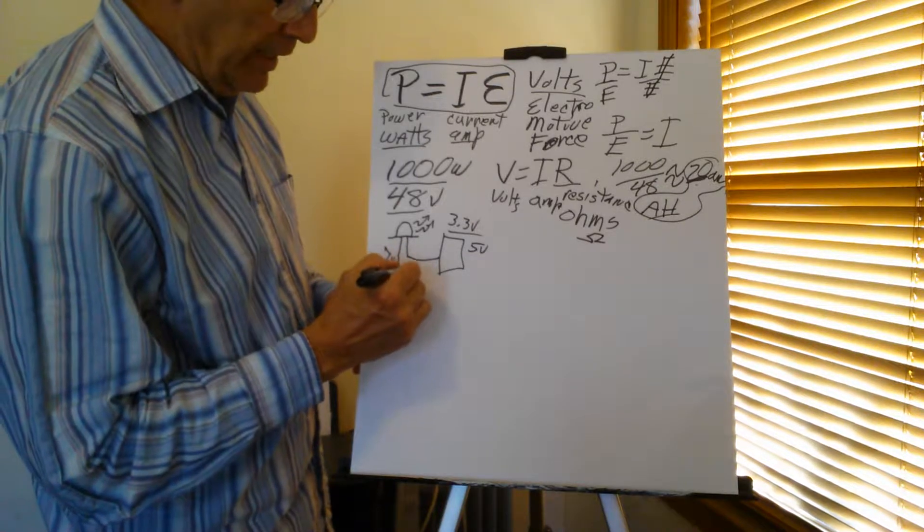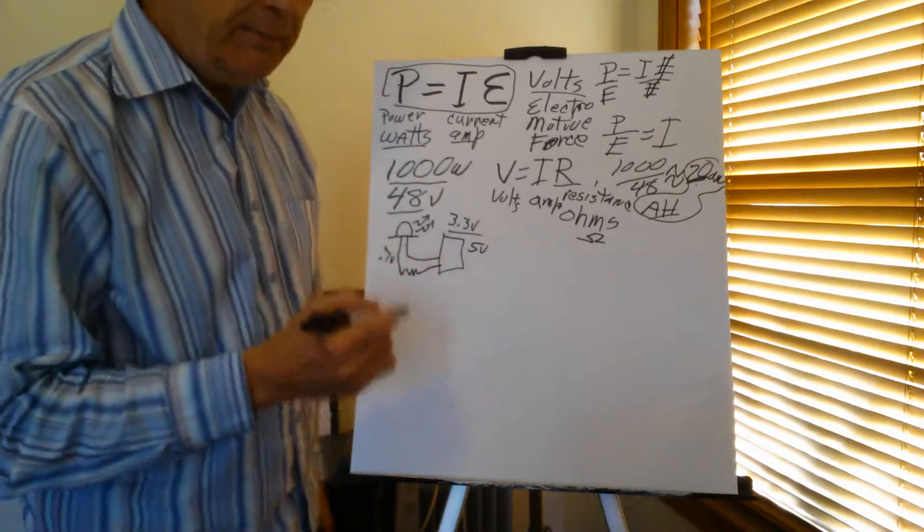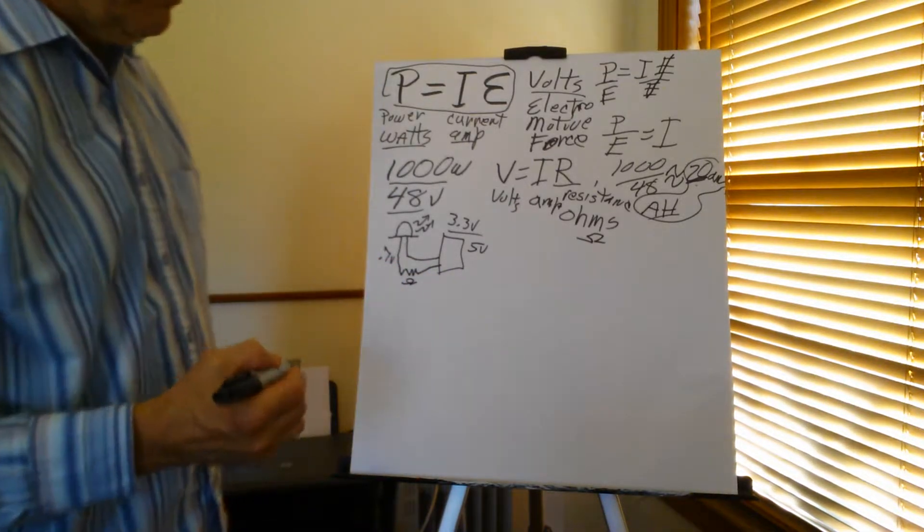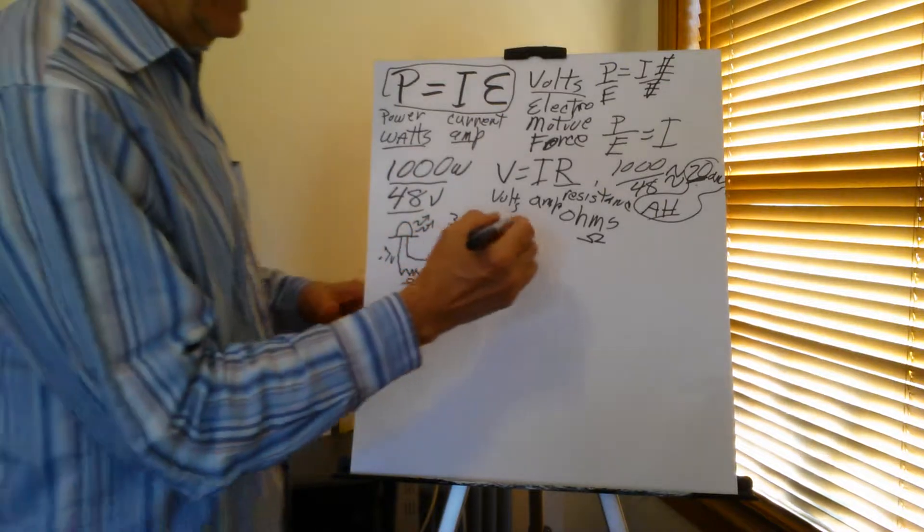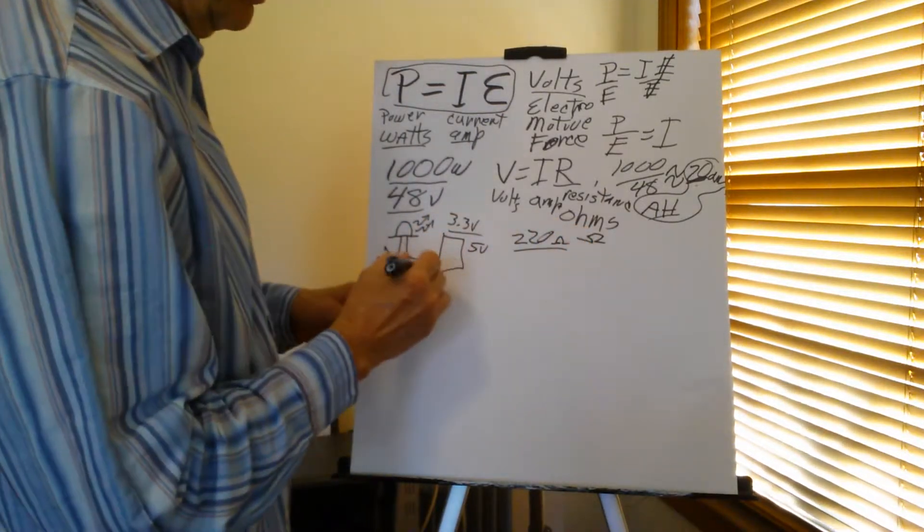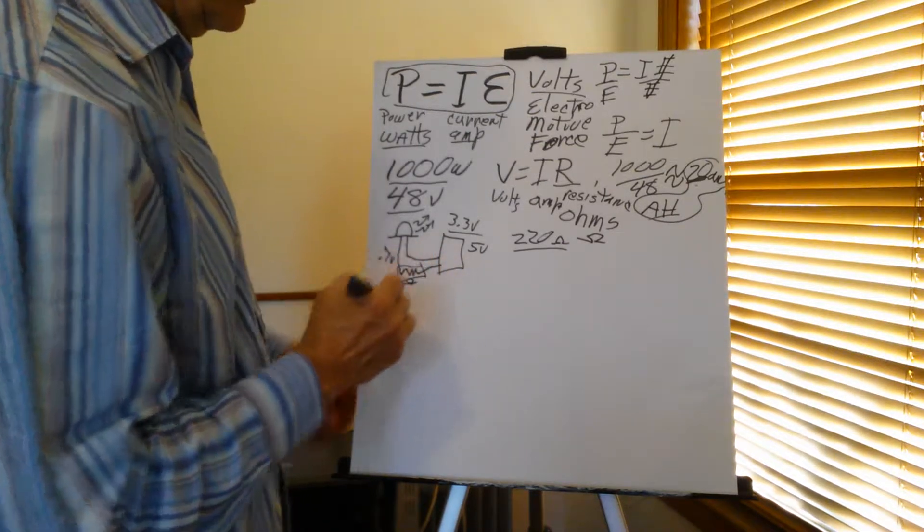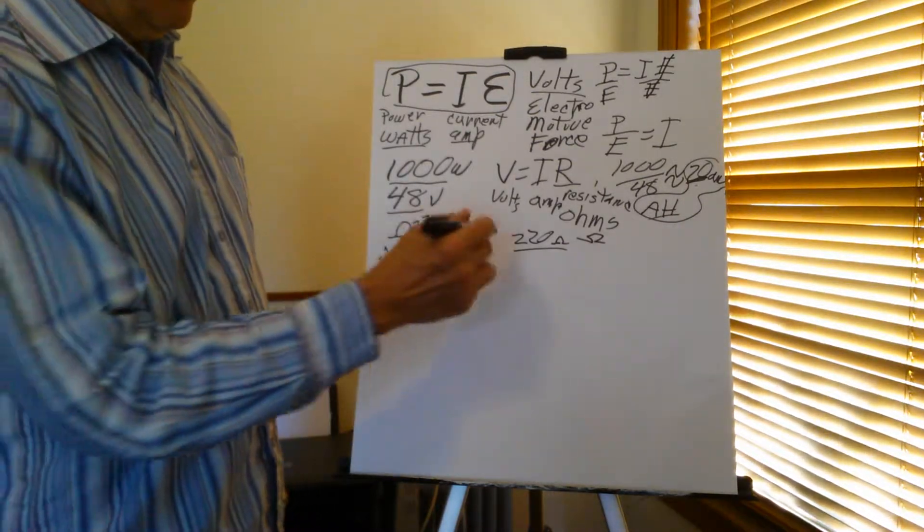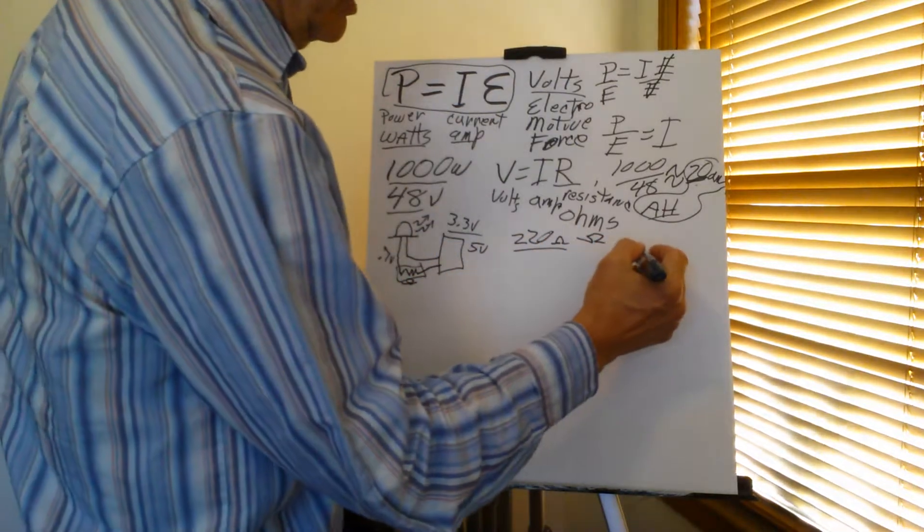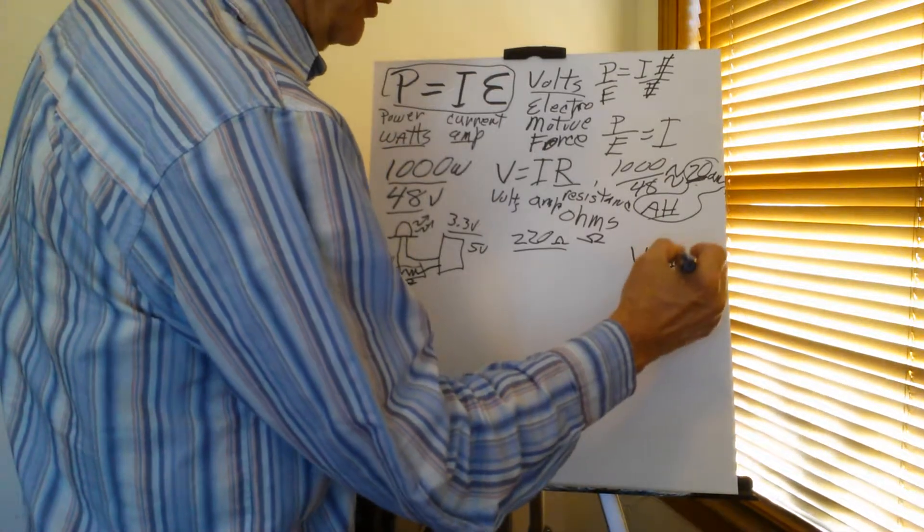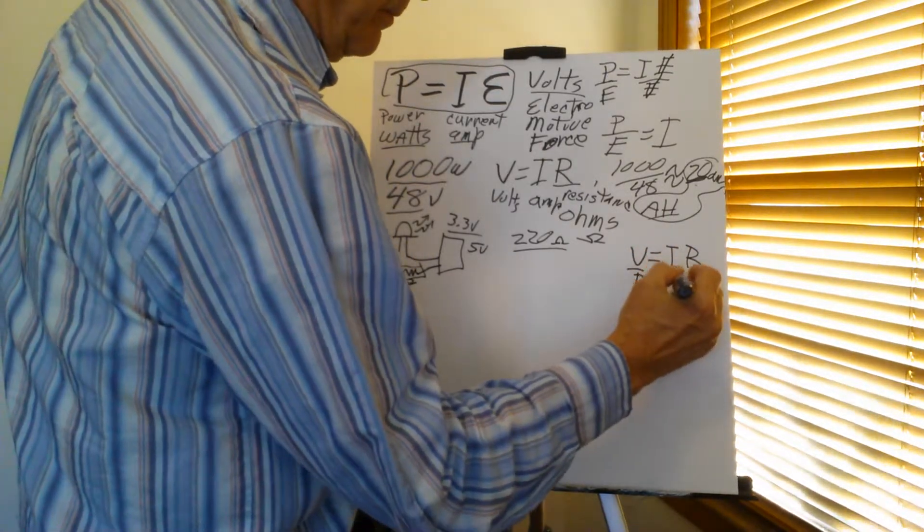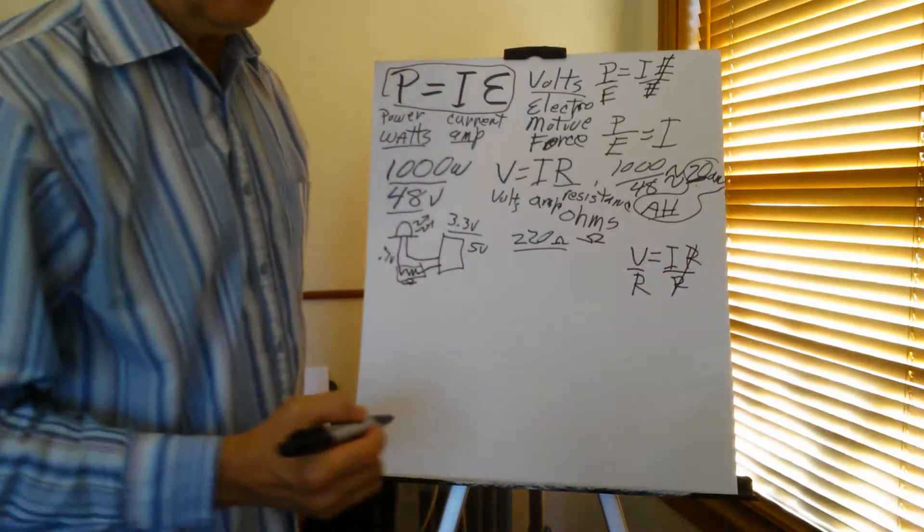So what you want to do is put a current limiting resistor in there. And typically to run an LED, we run a 220 ohm resistor. That's the symbol for the resistor. And that works out really good. You can do the math. Again, you've got voltage equals the current and resistance. We know the resistance and we're going to calculate for our current.